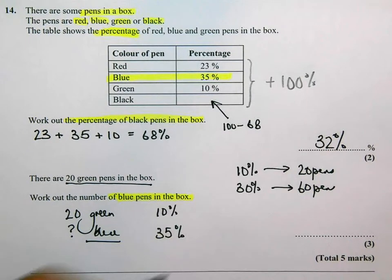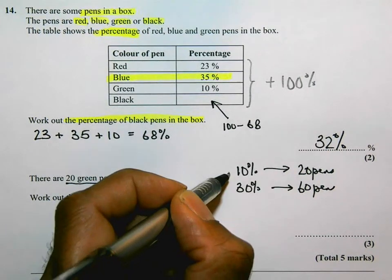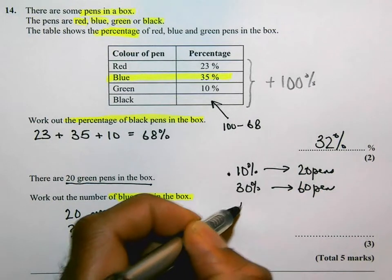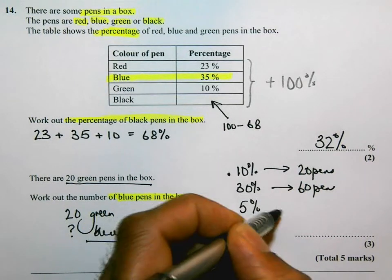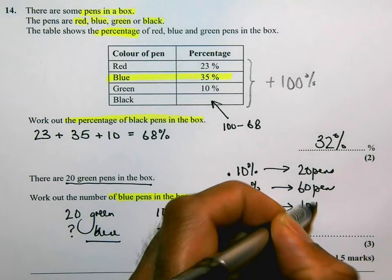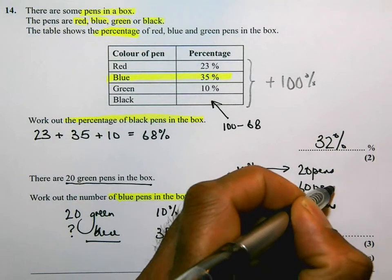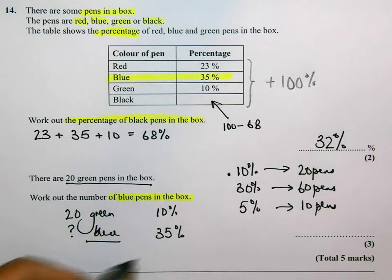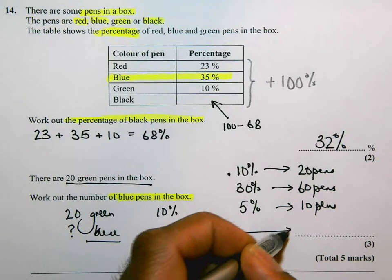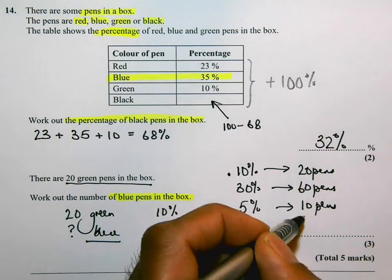Now if 10% is 20, then 5% is going to be 10 pens. So 35% is going to be 60 add 10, 70 pens.